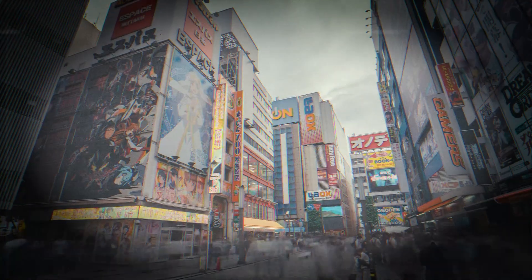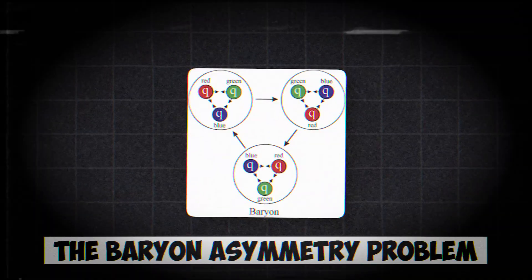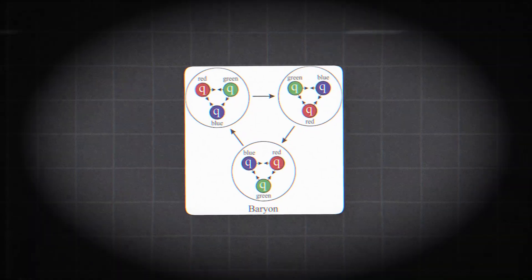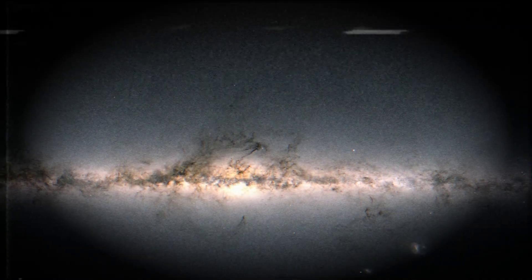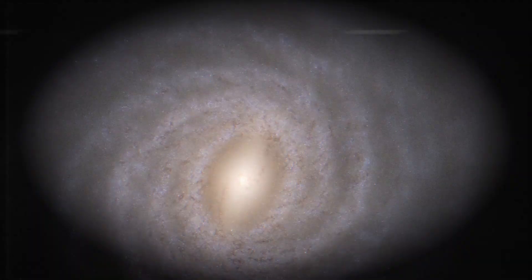Why did matter win? No one knows. Physicists have given the mystery a name: The Baryon Asymmetry Problem. But a name is not an answer. Solving it would mean explaining not just how the cosmos works, but why it exists at all.